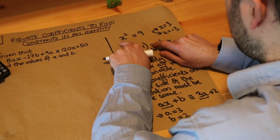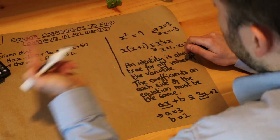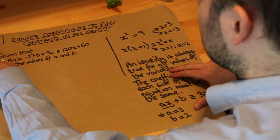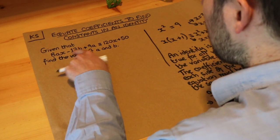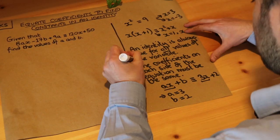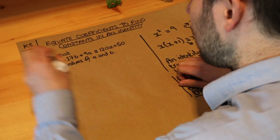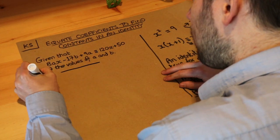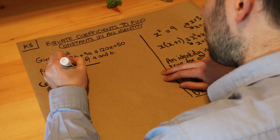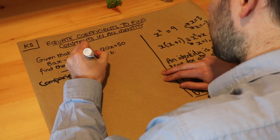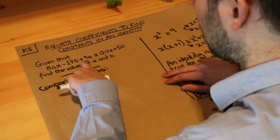This is only true for an identity — it's not true in general for all equations. For example, in the equation x squared equals 9, the coefficient of x squared is 1 on the left but there is no x squared term on the right, so the coefficient is 0. That's because it's an equation, not an identity. So let's apply that to this question here. We have this identity, and remember, the coefficients on each side of the equation must match — so let's look at the coefficients on each side.